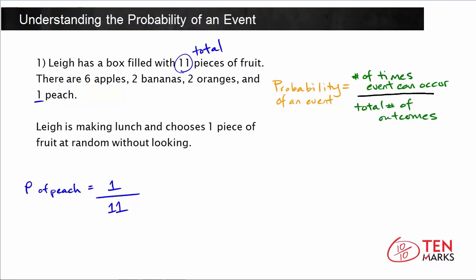So this means the probability of getting a peach is 1 over 11, which is less than one-half. So this is an unlikely event. Now, let's find another one. What's the probability that she picks a banana?